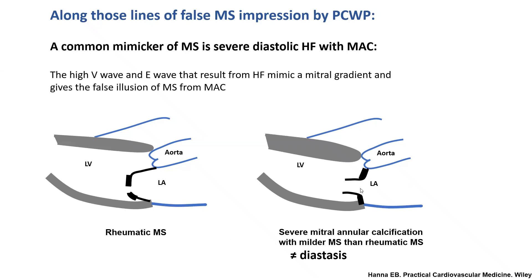MAC patients are old and frequently have diastolic dysfunction, some degree of MR, and atrial fibrillation — all of which increase E-wave and V-wave. When the E-wave is high on echo, some will misread it: they trace the E-wave and measure it as a pressure gradient. That is incorrect — it is actually more common to have mitral regurgitation with MAC than to have mitral stenosis.